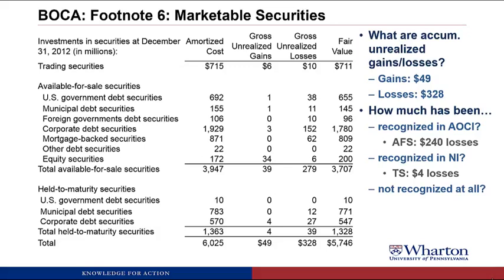Finally, how much has not been recognized at all? That's the held to maturity part. With held to maturity, you don't mark to market, so those losses never have to go anywhere. The held to maturity net unrealized loss is 35 — that's 39 minus four — but that's never been recognized anywhere in the financial statements because it stayed at cost.